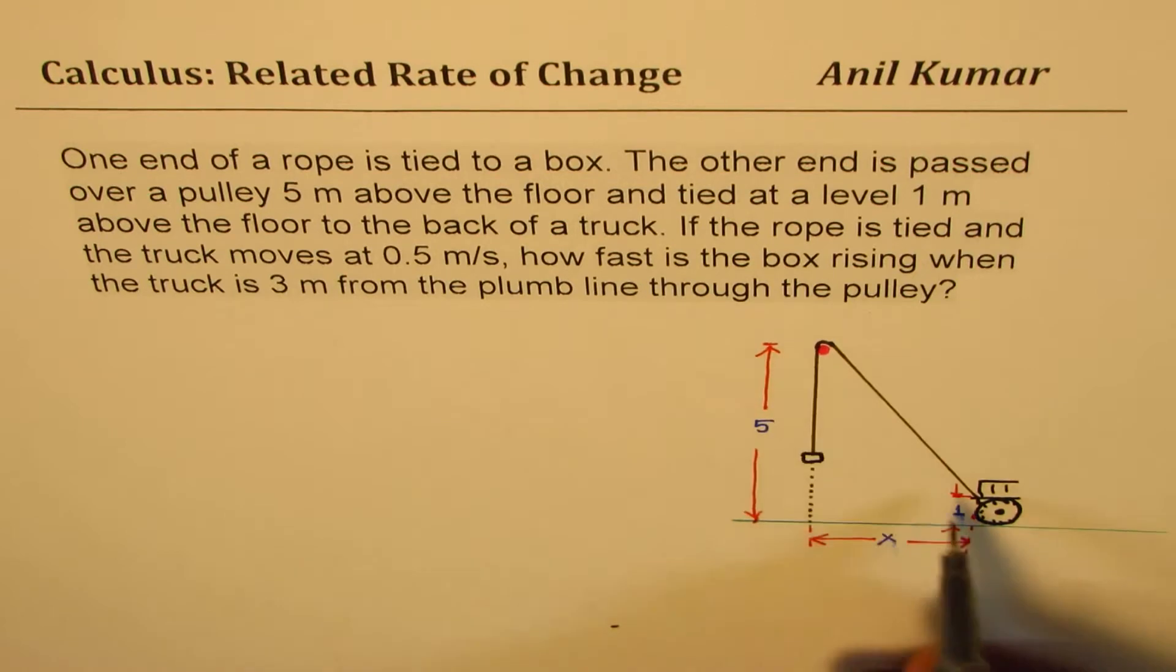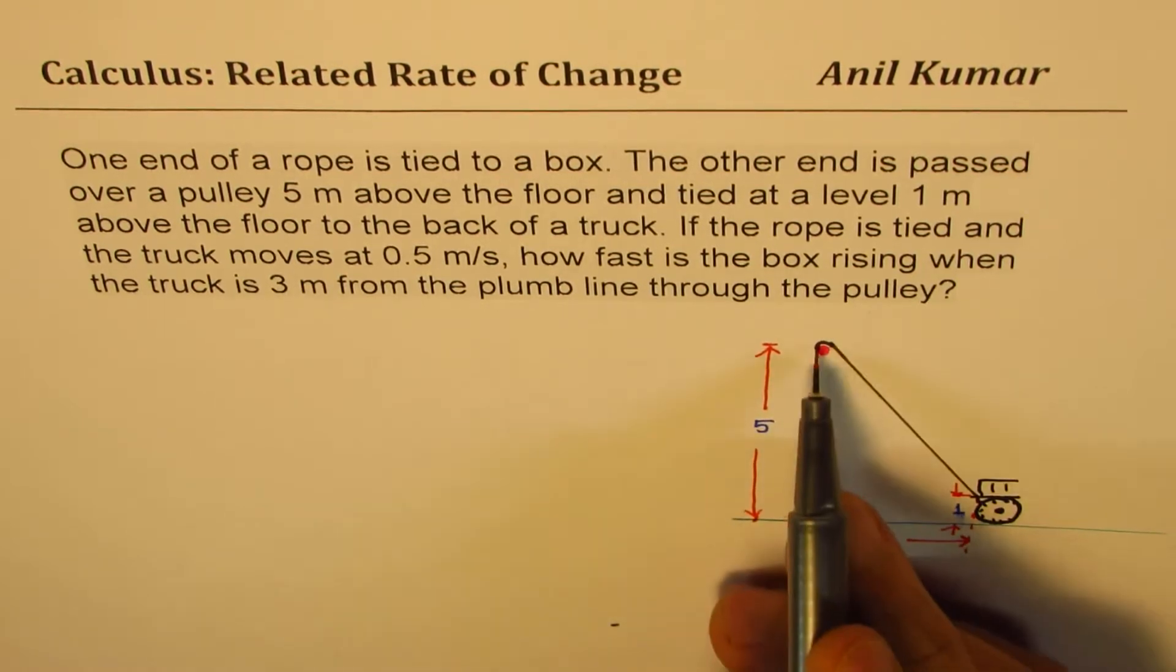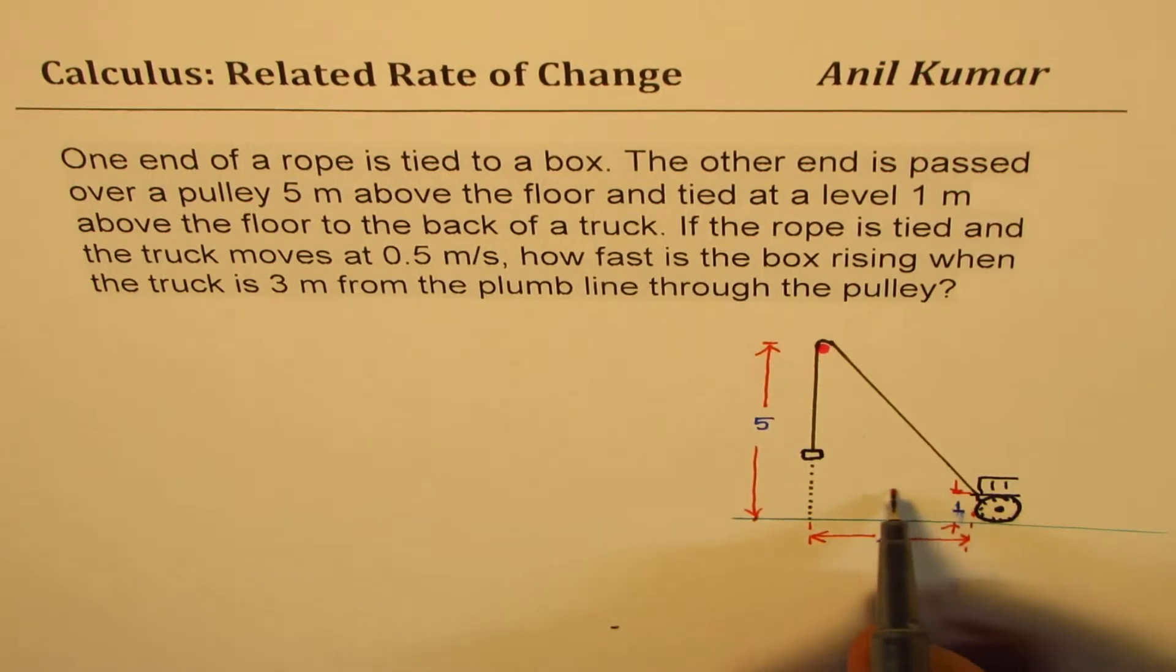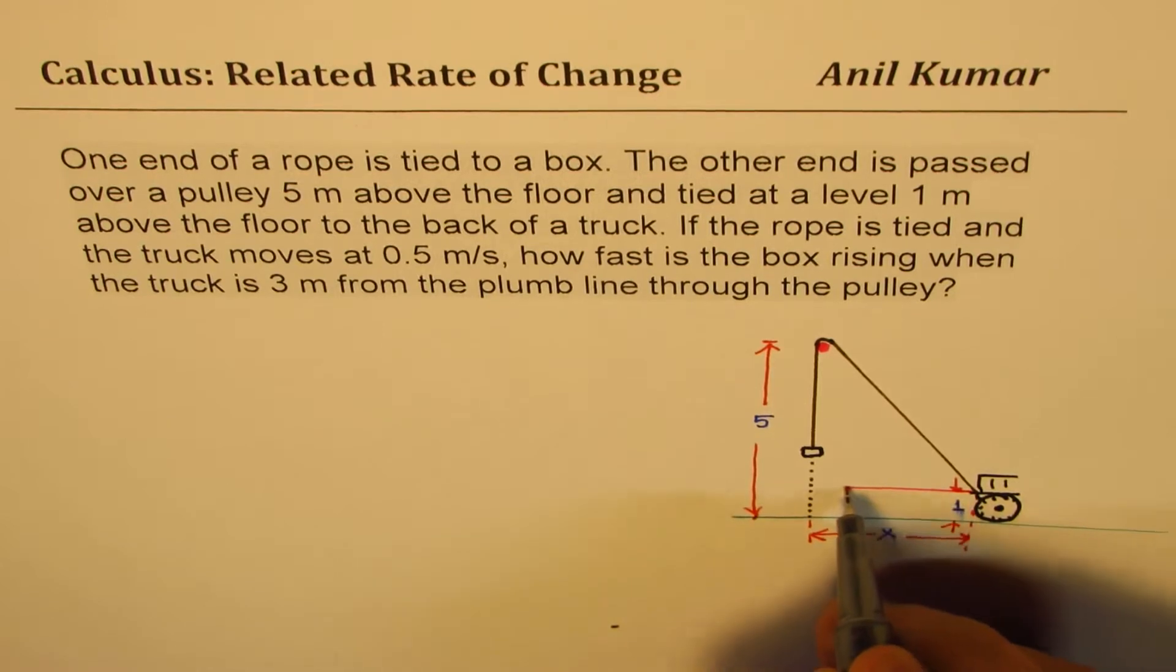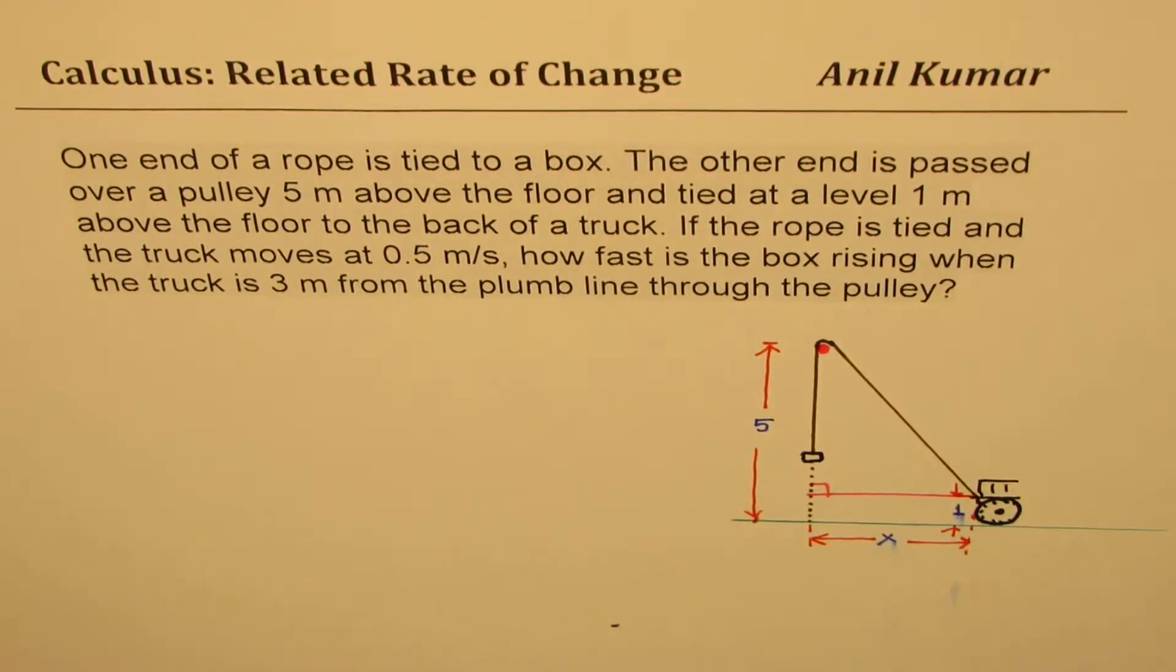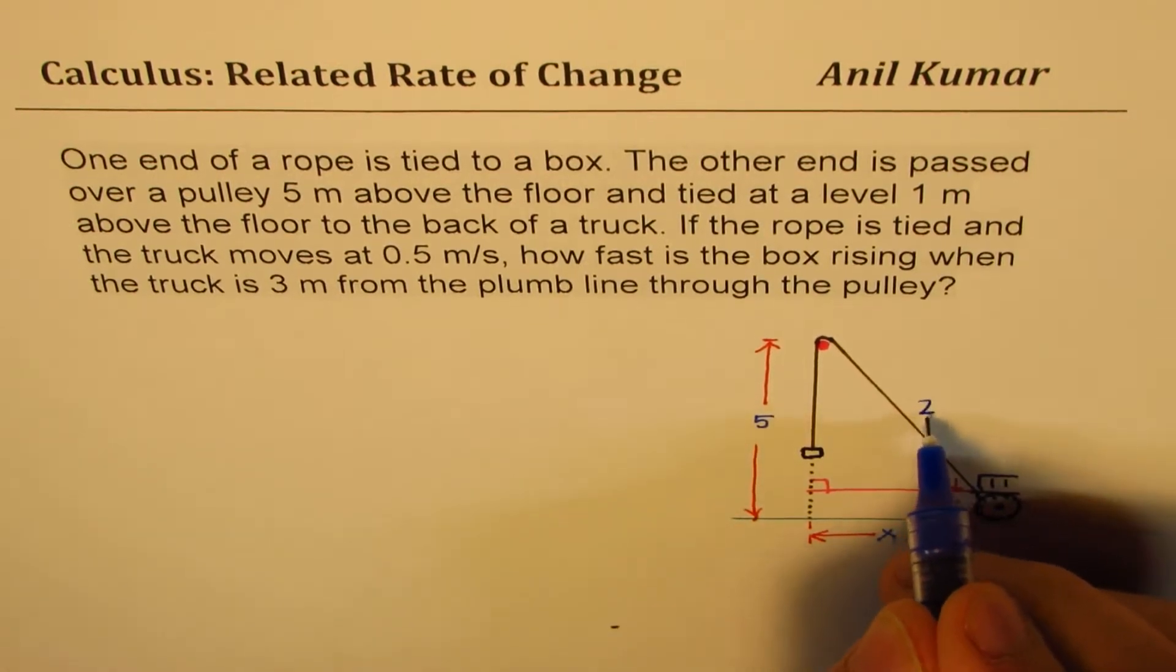Now here, this is the truck where the rope has been tied 1 meter above the floor and this pulley is 5 meters above the floor. So if I extend this, we'll make a right triangle here and we'll actually form equations using this right triangle.